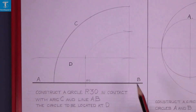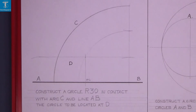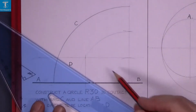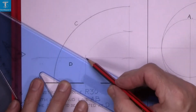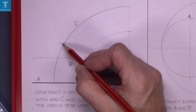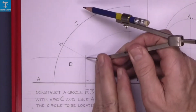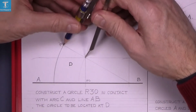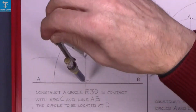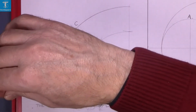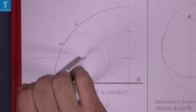To get the point of contact on arc C, join the arc C center to the new center and extend it — that gives us the point of contact. Set the compass to the point of contact, scribe your circle, and that's the first question complete.